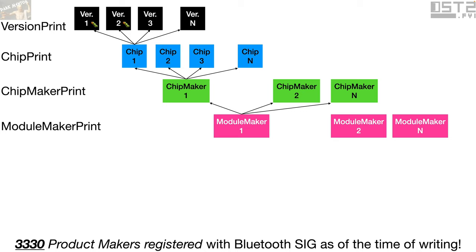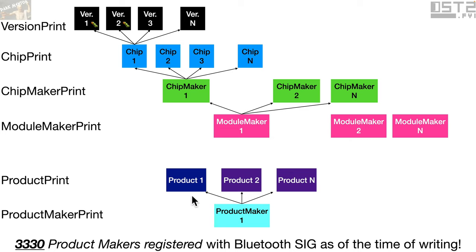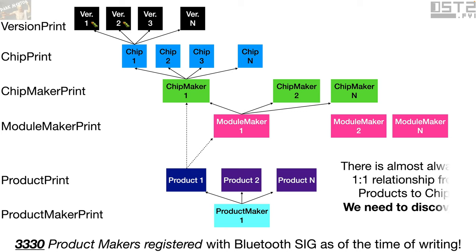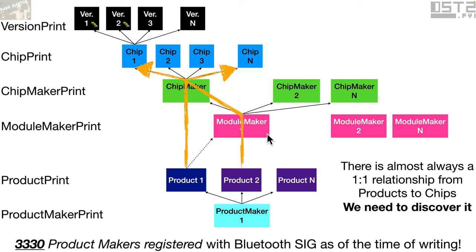Coming at this question from the opposite side, there are many product makers — people who make actual Bluetooth products, over 3,330 at the time these slides were written, and definitely more by now. For any given product maker they may have multiple products, and each product could have a specific chip or module associated with it, which naturally has an associated chip. There's almost always a one-to-one relationship between products and chips, and we need to discover that relationship.